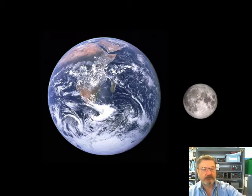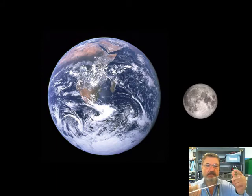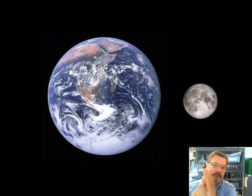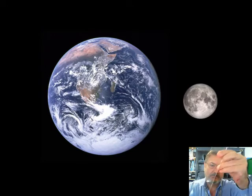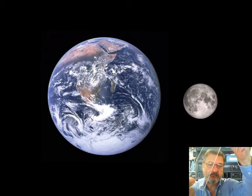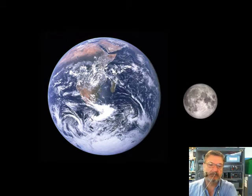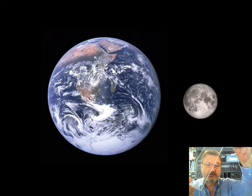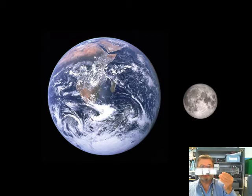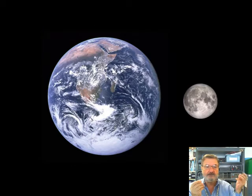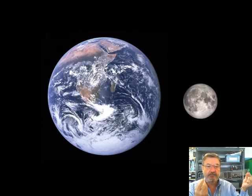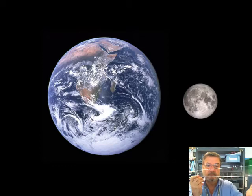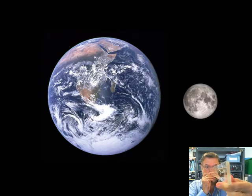A technician made this scale model for me. That ball bearing there represents the Earth, and that ball bearing there represents the moon. The interesting thing about it is that it's to scale — as in the distance between them as well. There's the Earth, there's the moon, and that's how far apart they are to scale. Crazy.